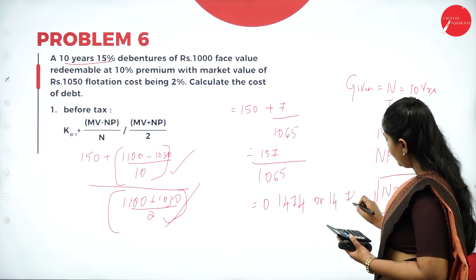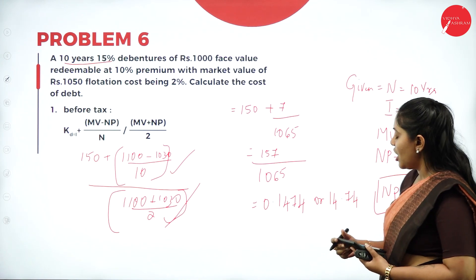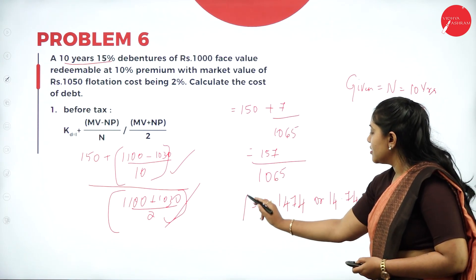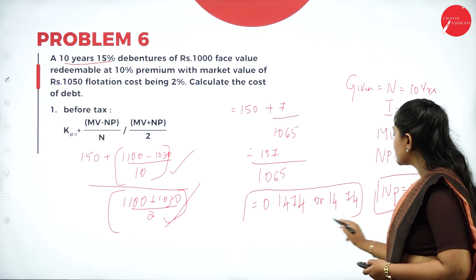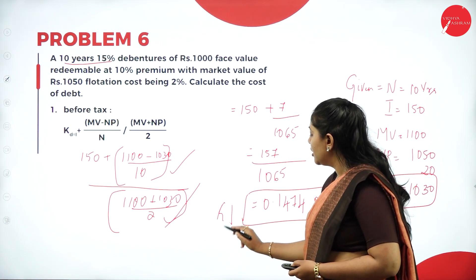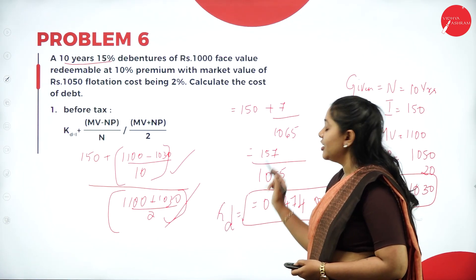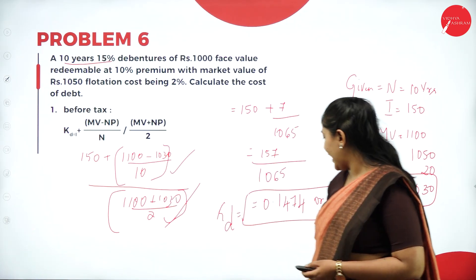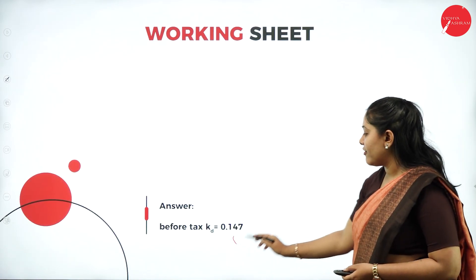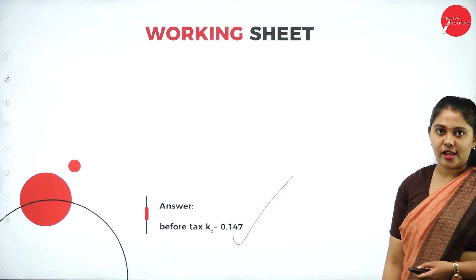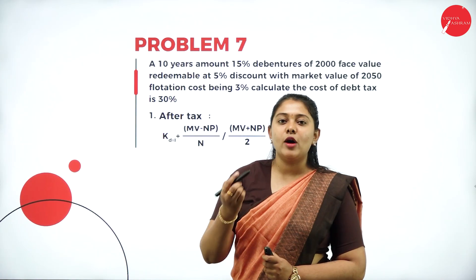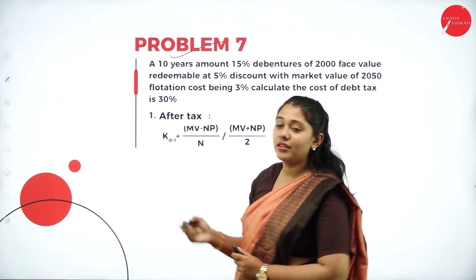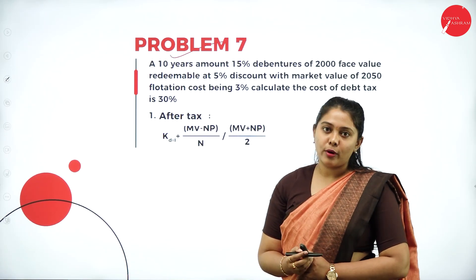The answer is 14.74%, which is the cost of redeemable debt before tax for Problem Number 6. Now let us look at Problem Number 7, which is a redeemable problem under discount.